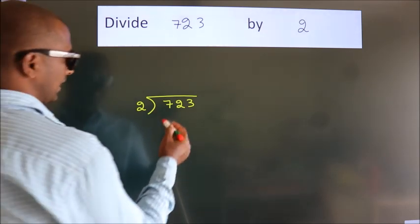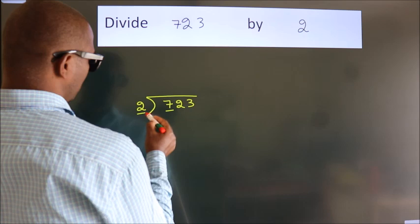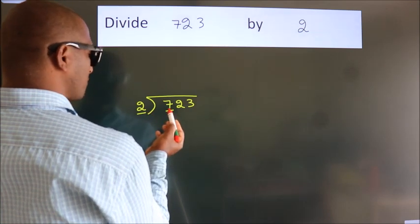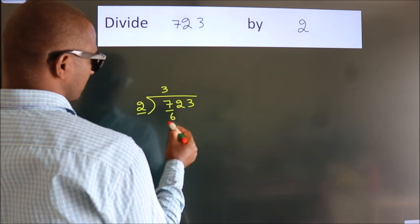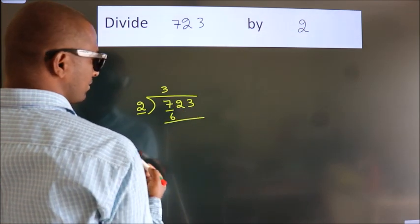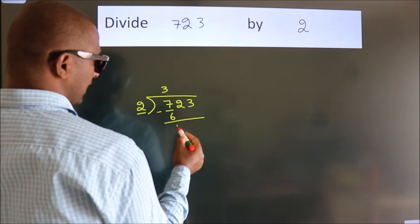Next, here we have 7, here 2. A number close to 7 in the 2 table is 2 threes, 6. Now we subtract and get 1.